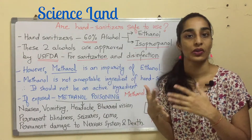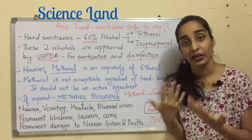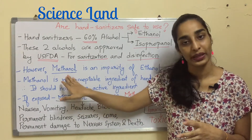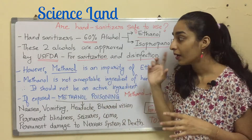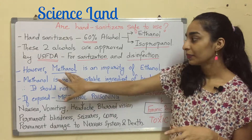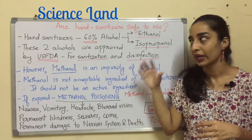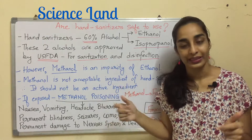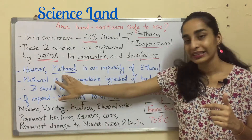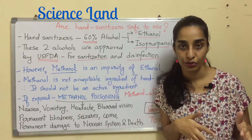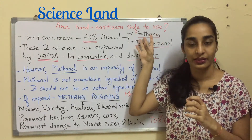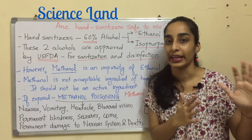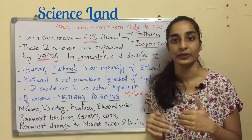Apart from these two alcohols, no other alcohol is approved by the US FDA for use in hand sanitizers or disinfectants. There is another alcohol known as methanol, which is not approved because it is very toxic. Methanol is an impurity of ethanol — whenever ethanol is produced on a large scale industrially, methanol is unintentionally produced as a byproduct.